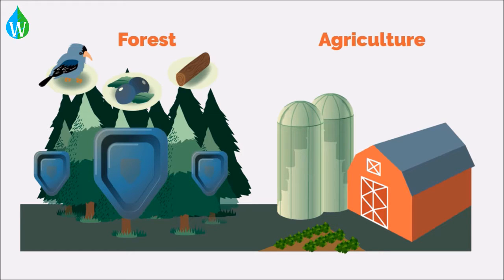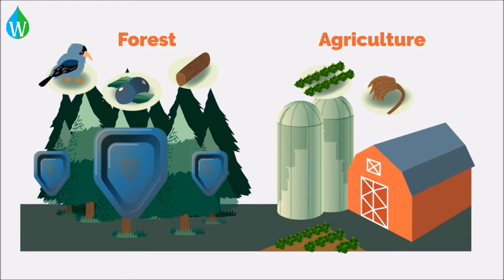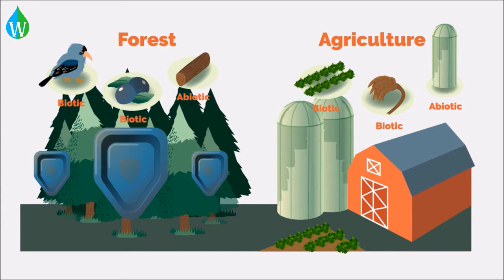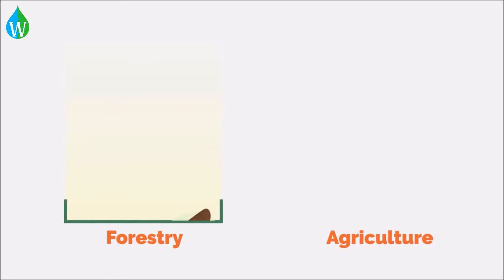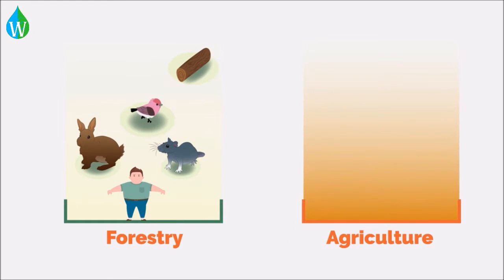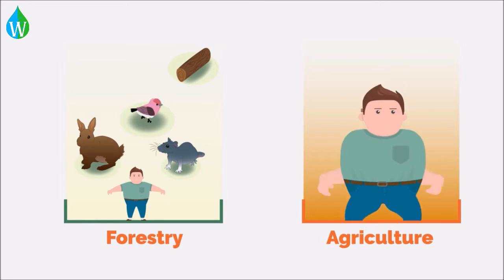In contrast, agriculture's primary goal is to grow crops that are harvested at least annually. While both forestry and agriculture are frequently aimed at the harvest of goods, these two management styles take vastly different approaches, since the ecosystems being managed have vastly different biotic and abiotic components. Forestry usually manages the ecosystem for the benefit of several species, while agriculture manages it for the benefit of a single species.